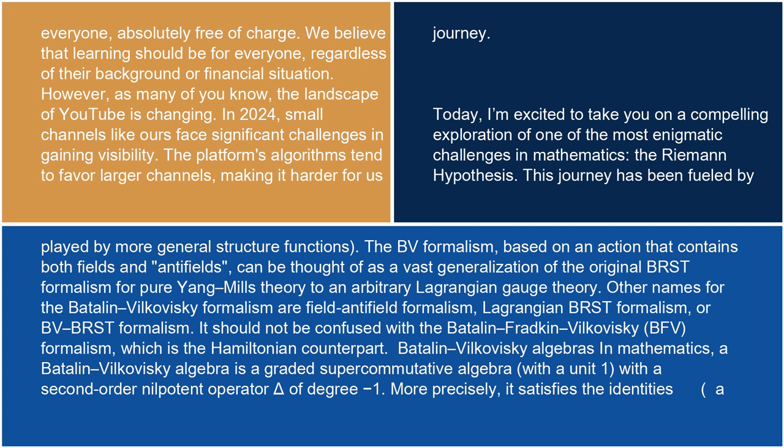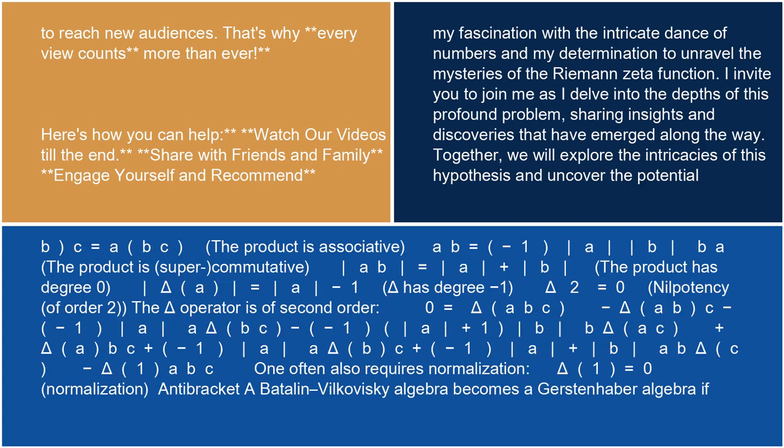In mathematics, a Batalin-Vilkovisky algebra is a graded supercommutative algebra with a unit 1 with a second-order nilpotent operator delta of degree minus 1. More precisely, it satisfies the identities: the product is associative; the product is supercommutative (AB equals minus 1 to the power |A||B| times BA); the product has degree 0; delta has degree minus 1; and delta squared equals 0 (nilpotency of order 2).